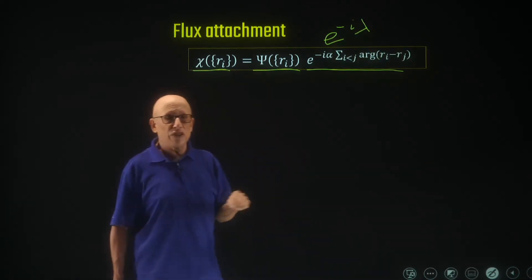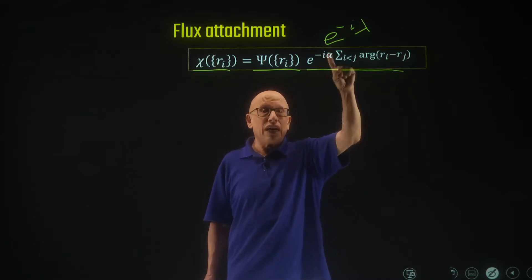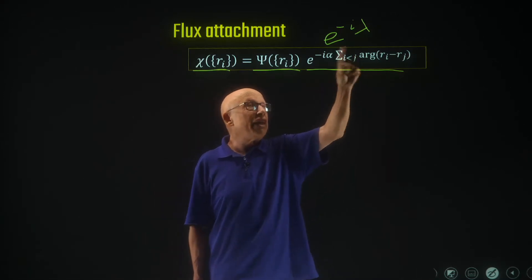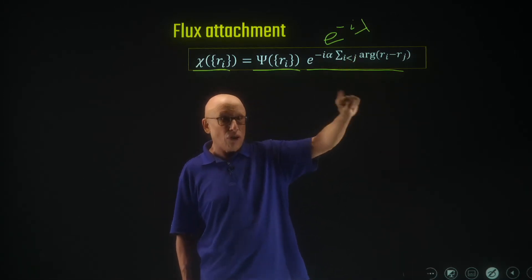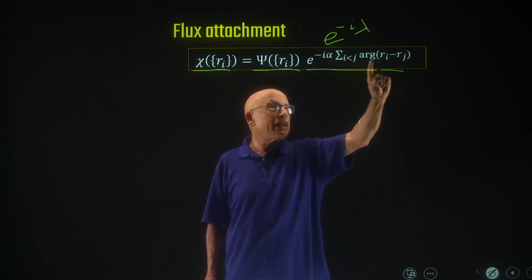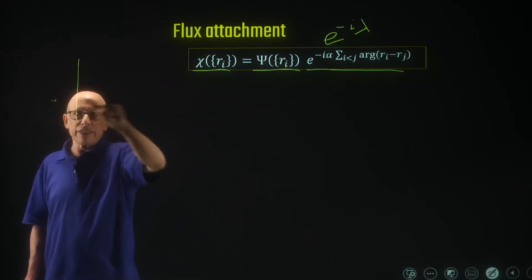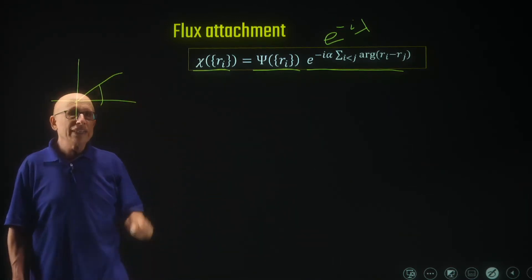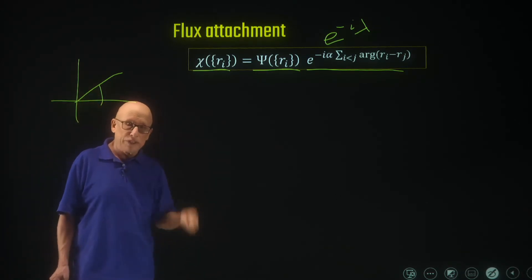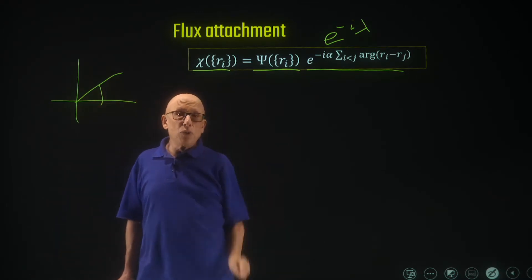This is basically a gauge transformation. The phase factor is e to the minus alpha, where alpha is a number, and then a sum over all pairs of electron coordinates. For each pair we get the argument of the vector that connects the two electrons in the pair — the angle it forms with some arbitrary x-axis. This is our new wave function and we'd like to have an equation for it.